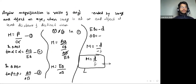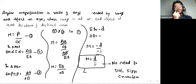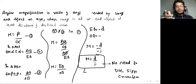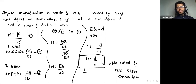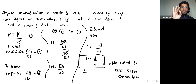One last important point: in all relations of optical instruments, there is no need to use sign convention. These are not general relations — each relation is valid for that particular instrument and case. So in numericals, just put the numerical values of f and D directly — no positive or negative signs needed.